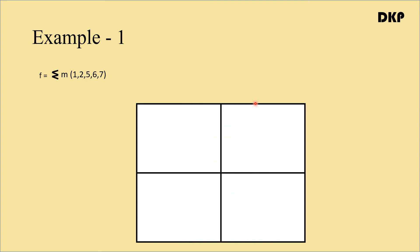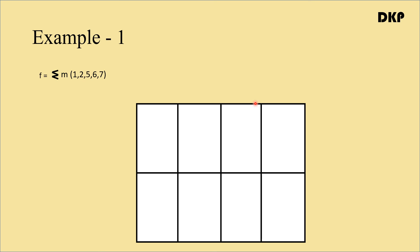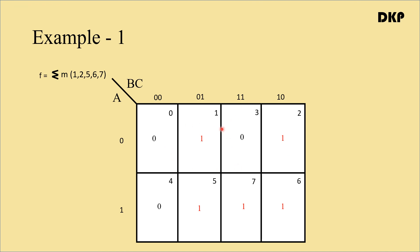Now we have to place 1s in the corresponding cells in the K-map. The min terms present in the expression are 1, 2, 5, 6, and 7. So place a 1 in cell number 1, a 1 in cell number 2, a 1 in cell number 5, a 1 in cell number 6, and a 1 in cell number 7. The remaining cells should have 0s placed in them. So the mapping of the SOP expression is done.